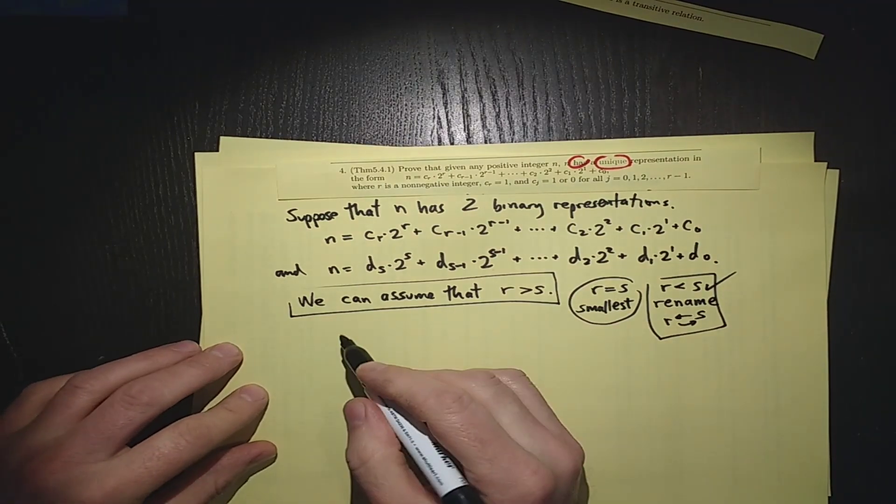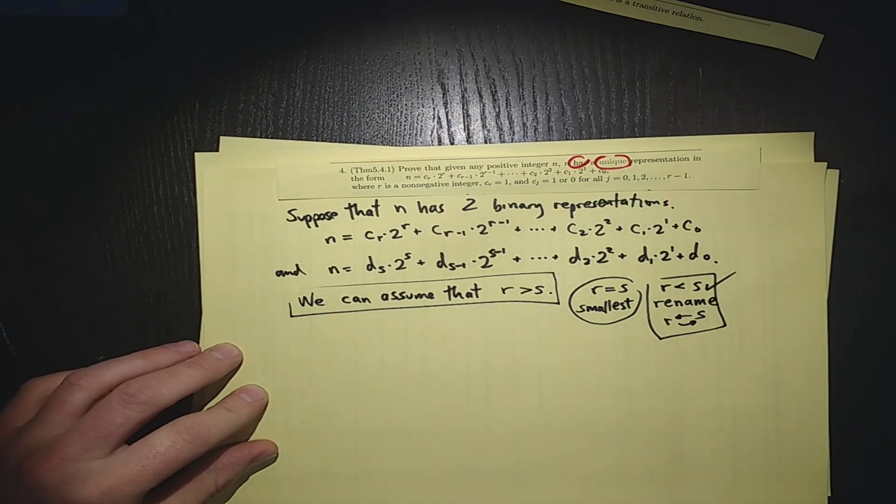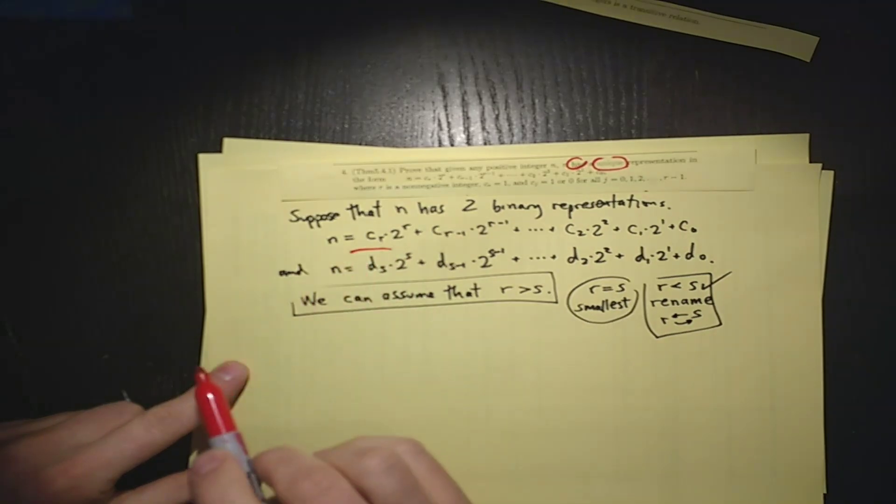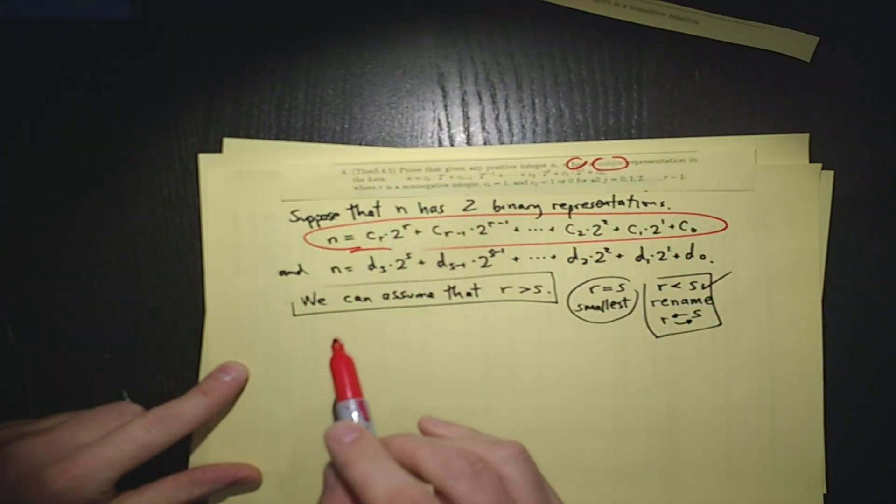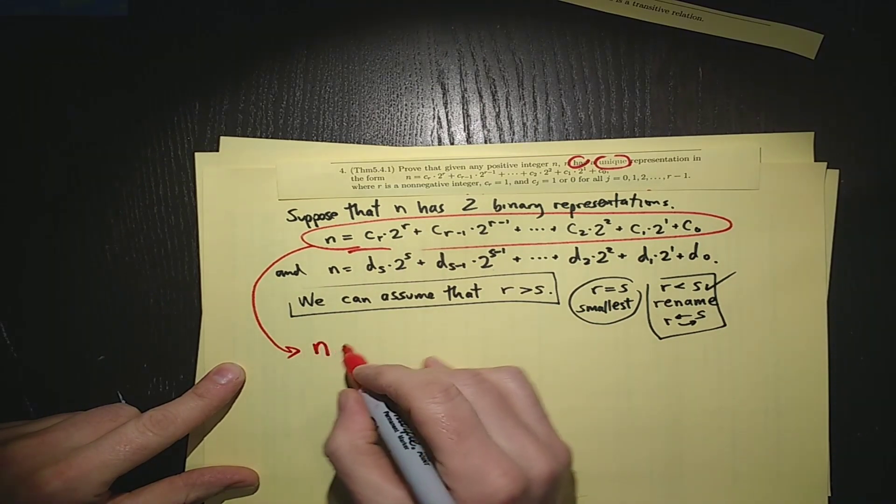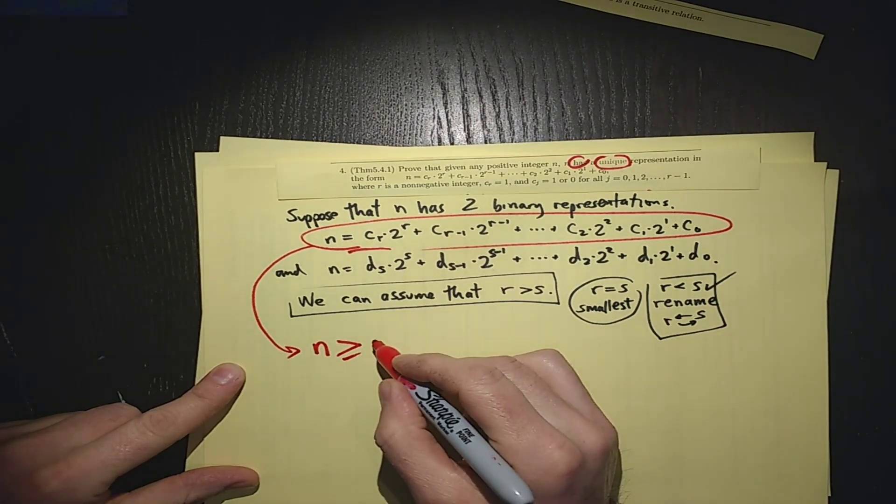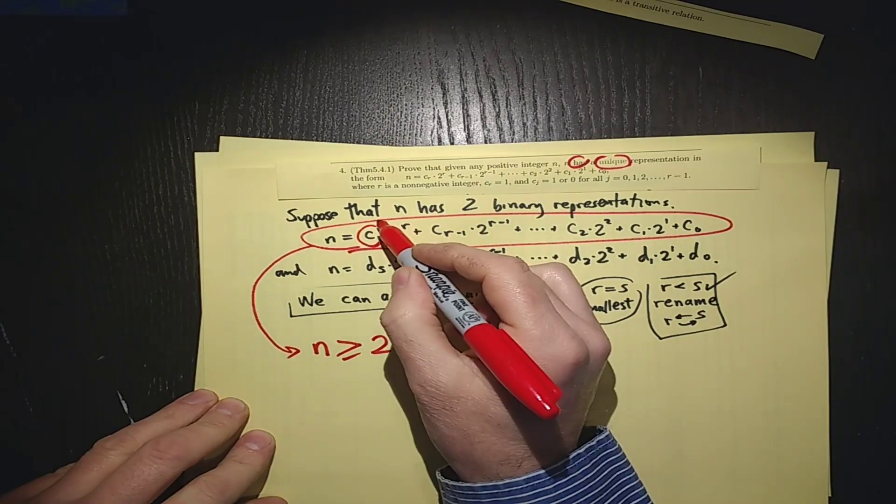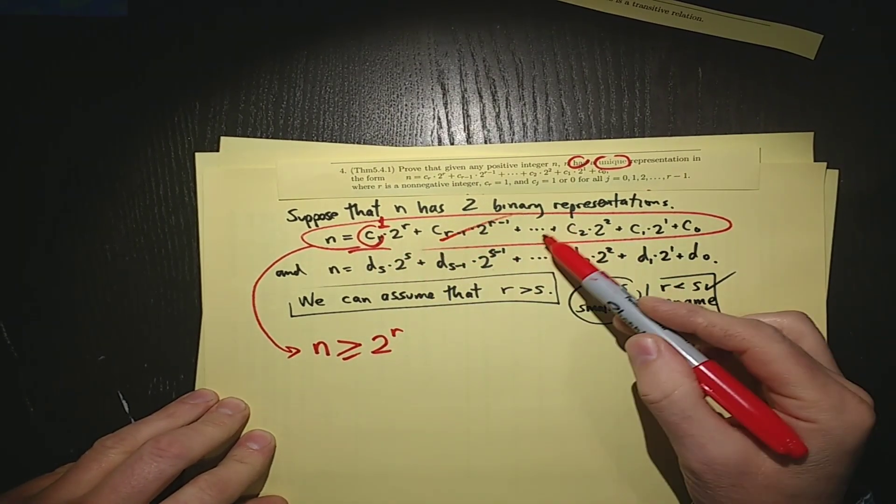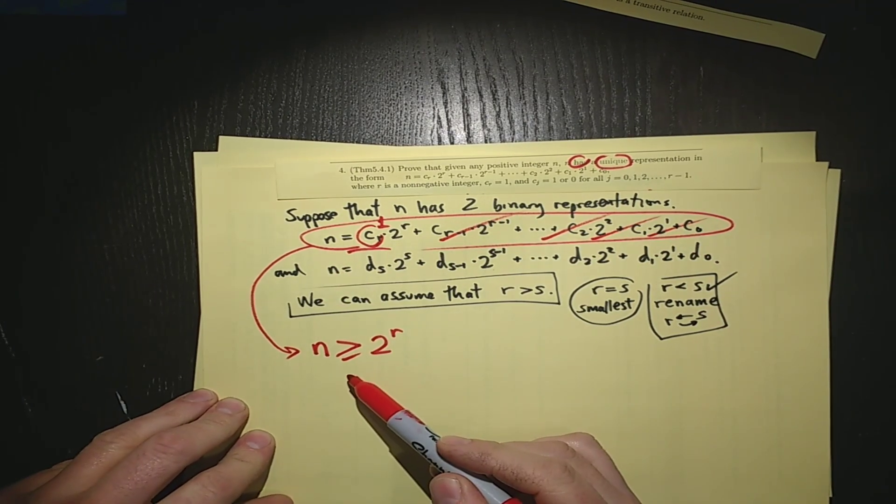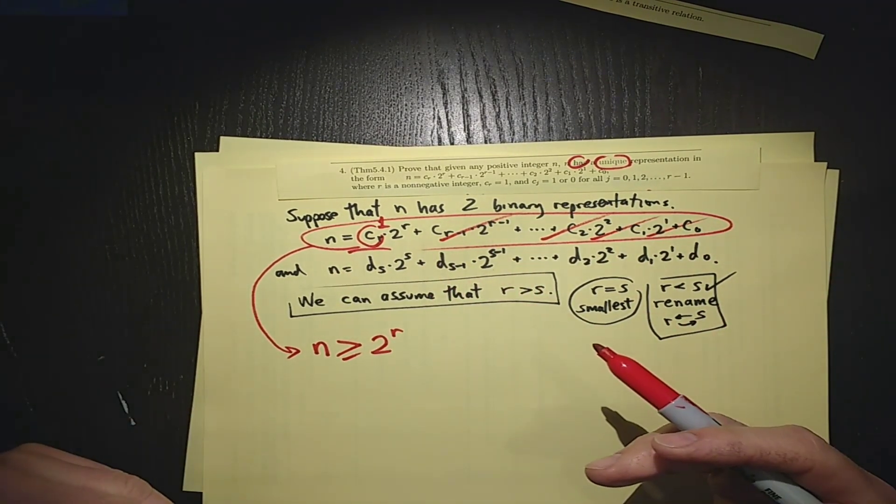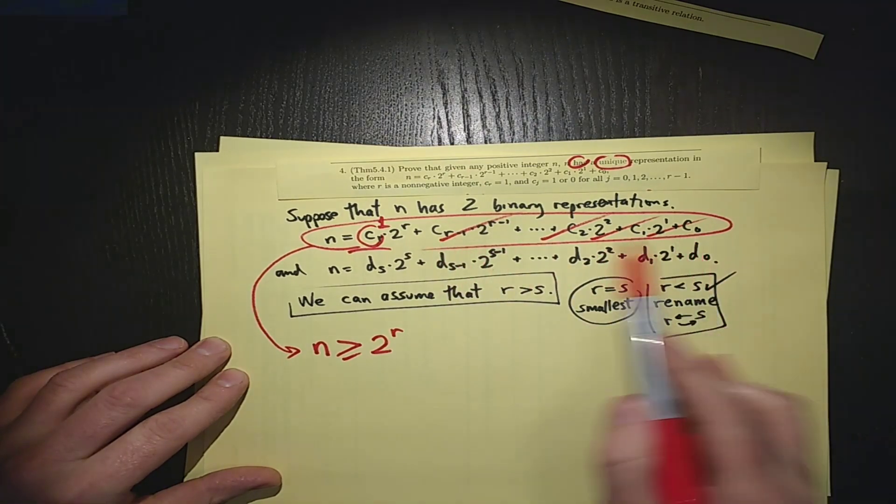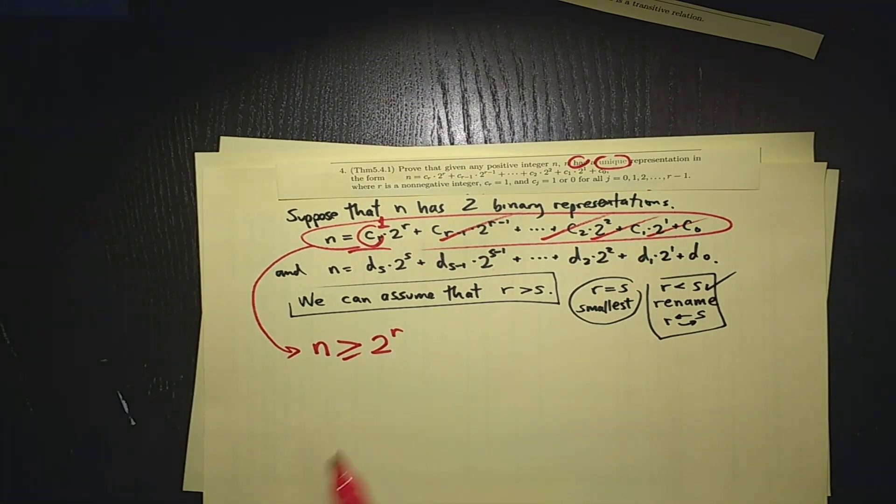And with this, what I want to show you is that on the one hand, with this first representation, r is bigger than s over here, this means that n is bigger than or maybe equal to 2 to the r. To get that, we know that this coefficient is one, so one times 2 to the r is here, and if we just throw away all of these other terms, then we'd be getting a smaller number. So n is bigger than this because n is this term plus possibly more terms, because these might all be zero. So n could equal 2 to the r, but it's at least that big.